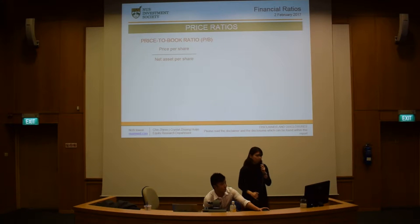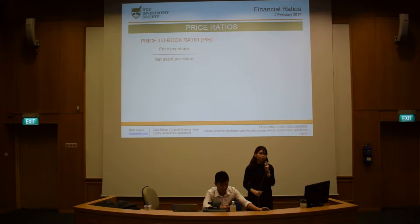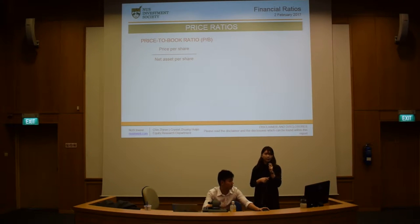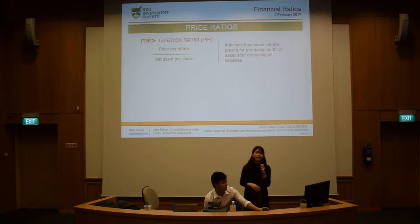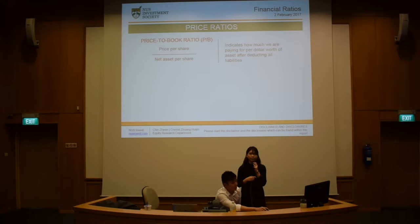The next price ratio is the price-to-book ratio, or PB for short. Price-to-book ratio is the price per share divided by the net asset per share. It indicates how much we are paying per dollar worth of asset after deducting all liabilities.